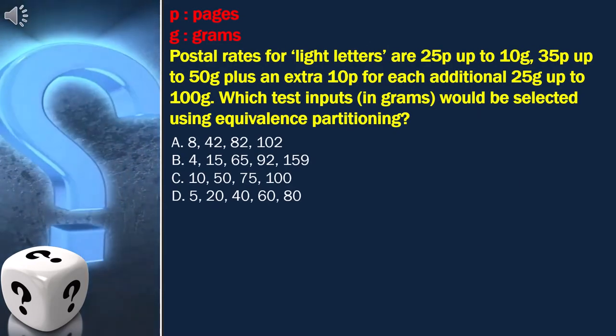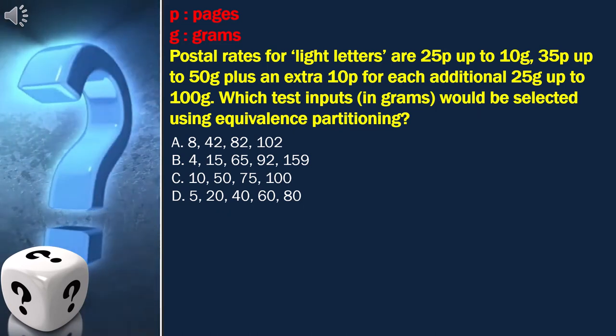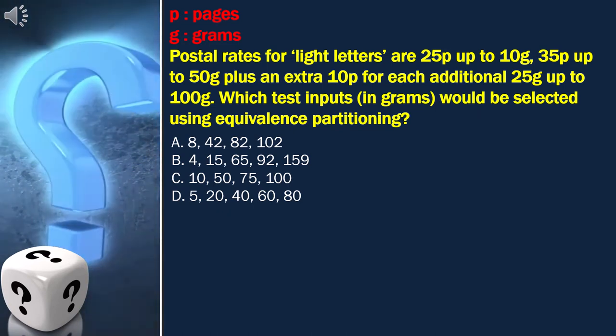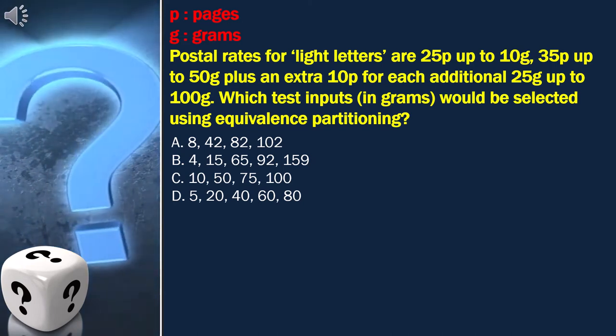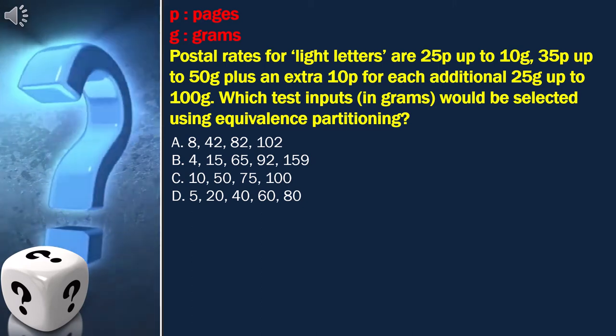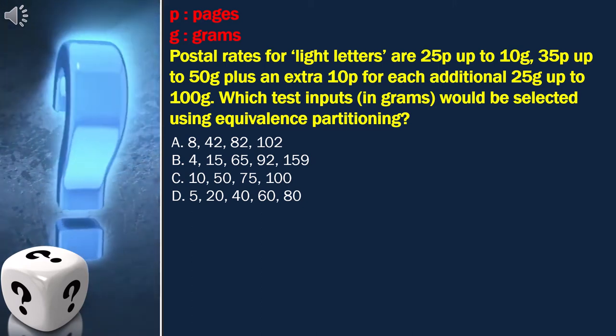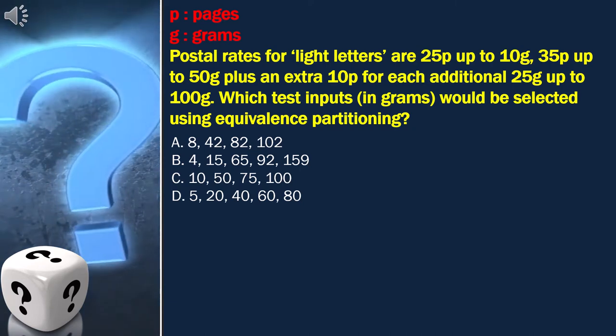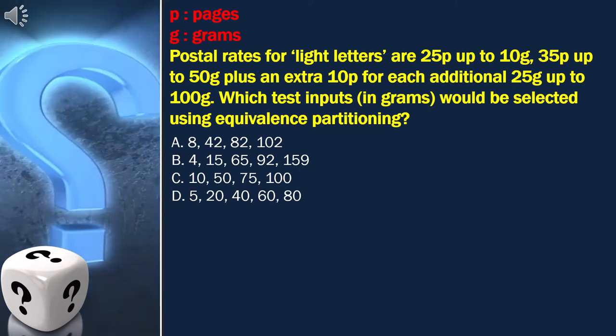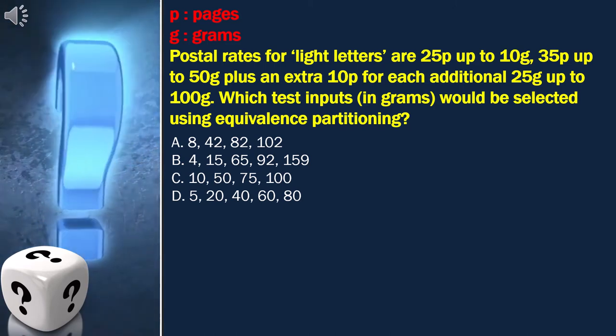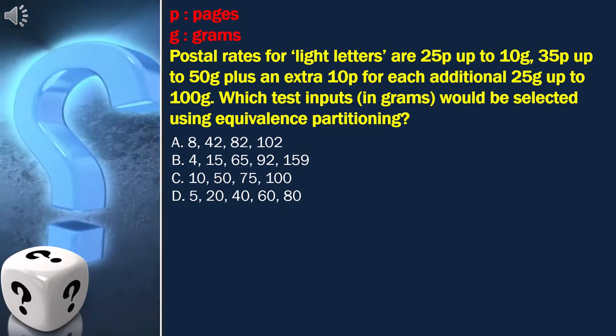Here the question is, postal rates for light letters are 25p up to 10g, 35p up to 50g, plus an extra 10p for each additional 25g up to 100g. Let's see which test inputs in grams would be selected using equivalence partitioning. And these are our options.